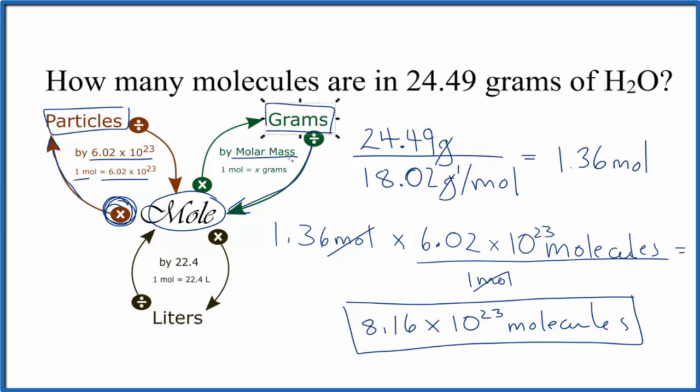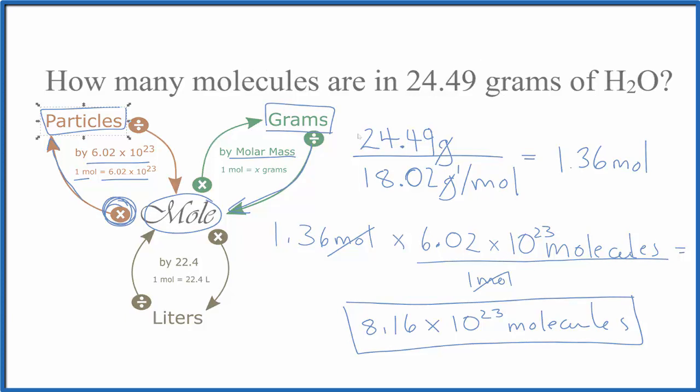So to recap, we took grams divided by the molar mass to get moles. And from moles, we multiplied by Avogadro's number to get molecules. This is Dr. B, converting from grams of water to molecules of water. Thanks for watching.